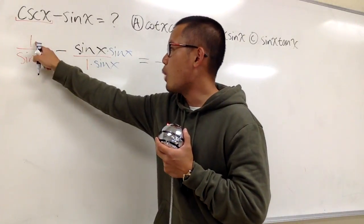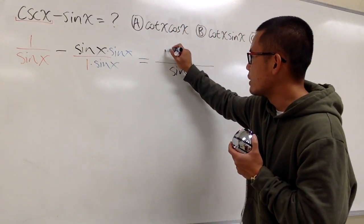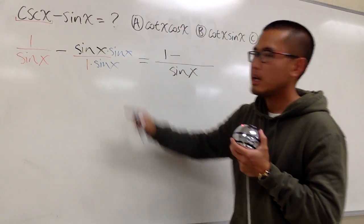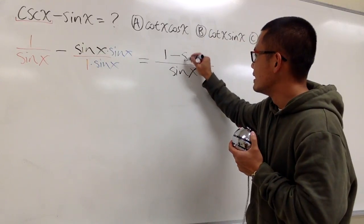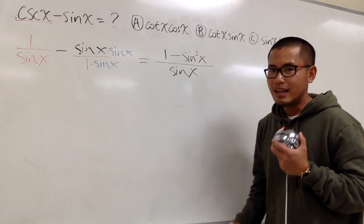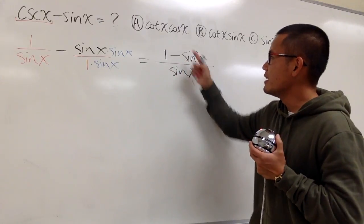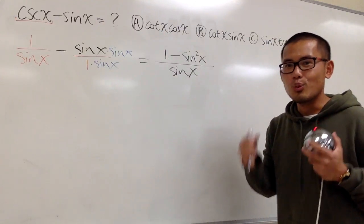And then on the top, we have this 1 and then minus. So let's put that down. 1 minus sin x times sin x. That's sin square x. And as you can see, this is certainly not one of these. So we have to do more work for this.